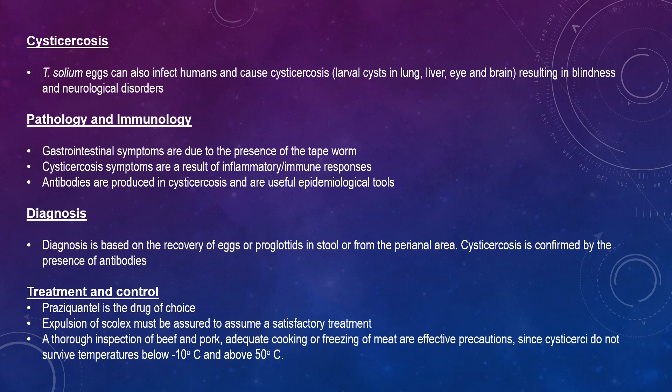For cysticercosis, T. solium eggs can infect humans and cause cysticercosis. This involves larval cysts in the lung, liver, eye, and brain, resulting in blindness and neurological disorders. Densities can be as high as 1 per 1,000 and can account for up to 20% of neurological cases in some countries such as Mexico.